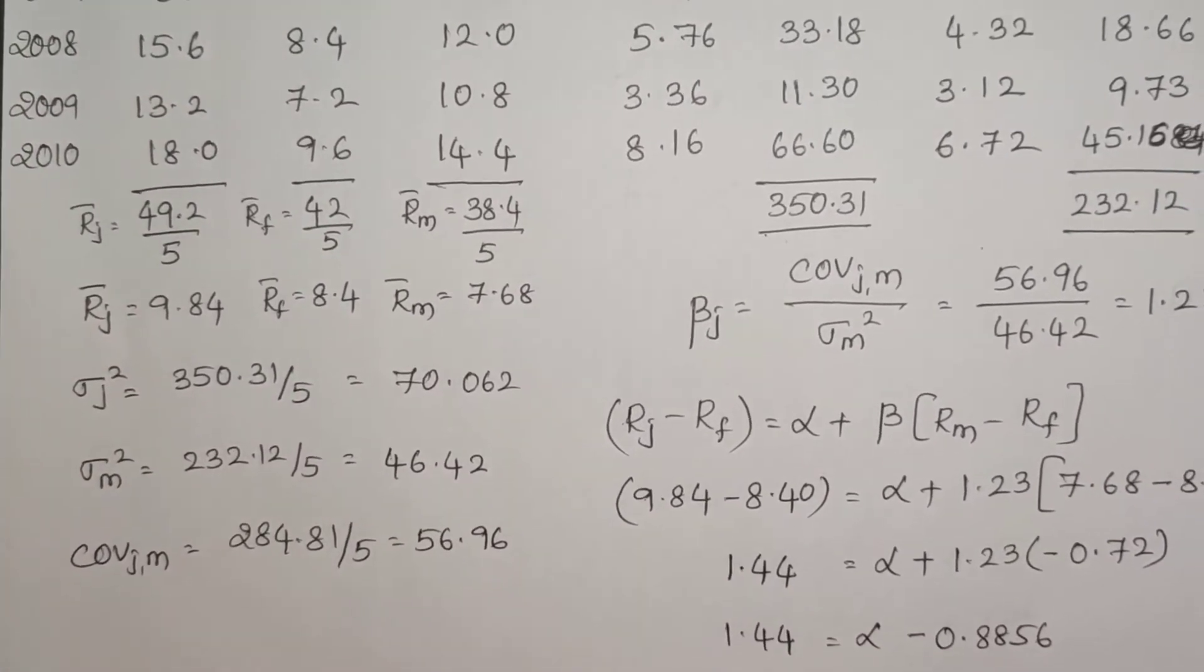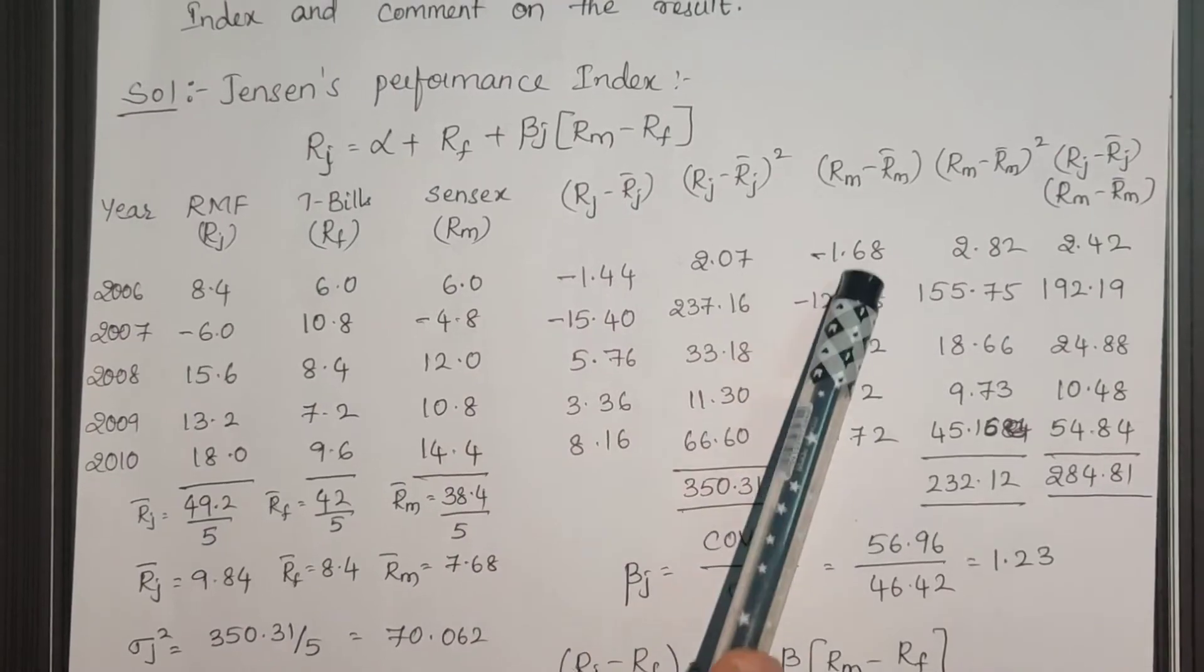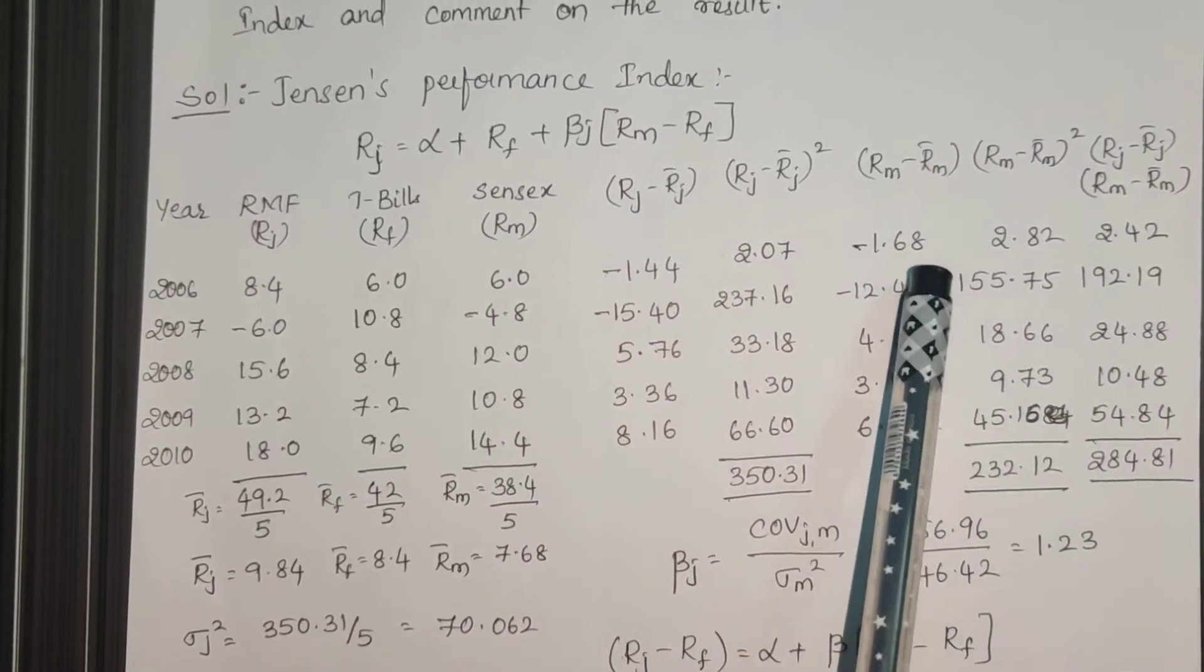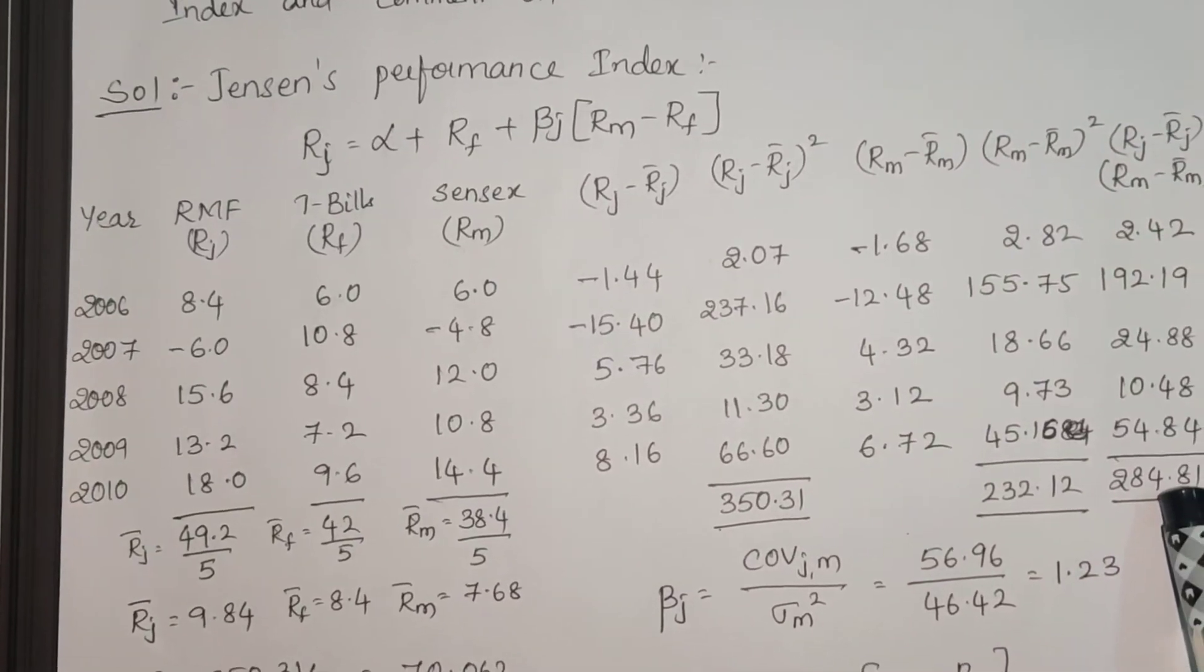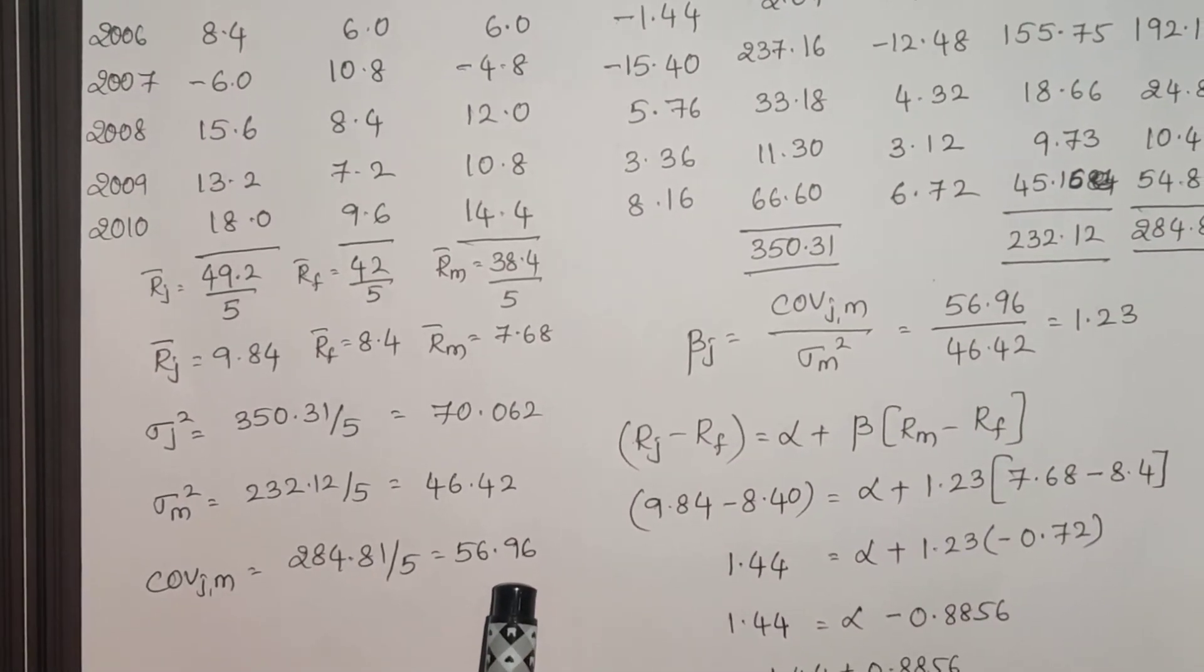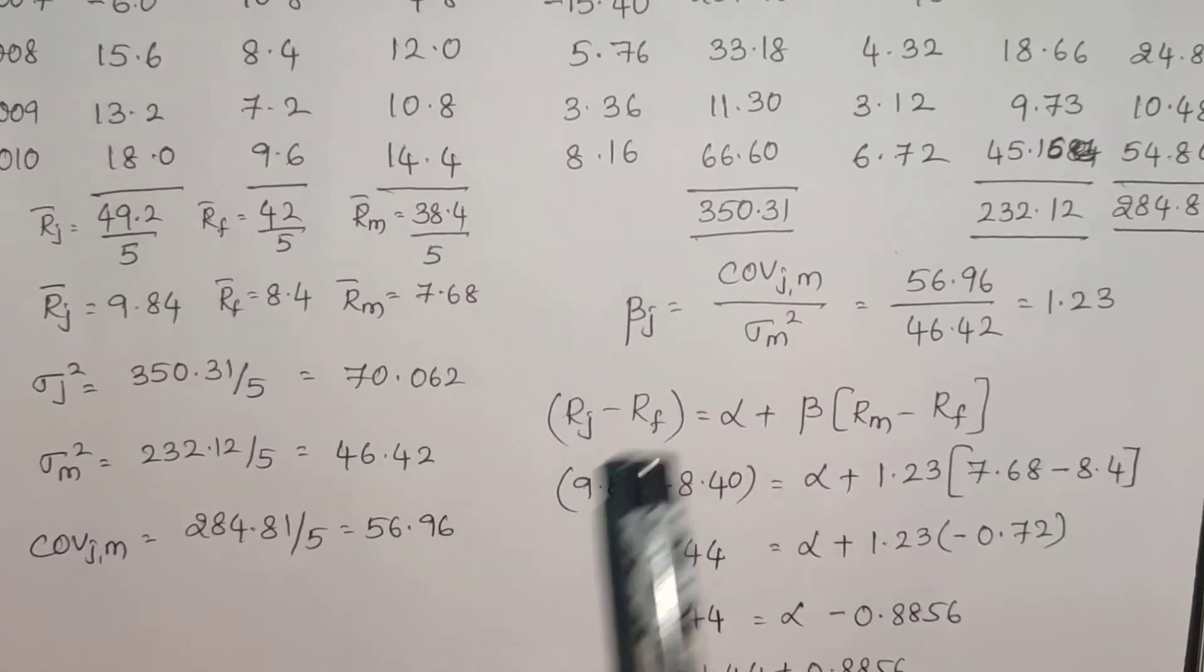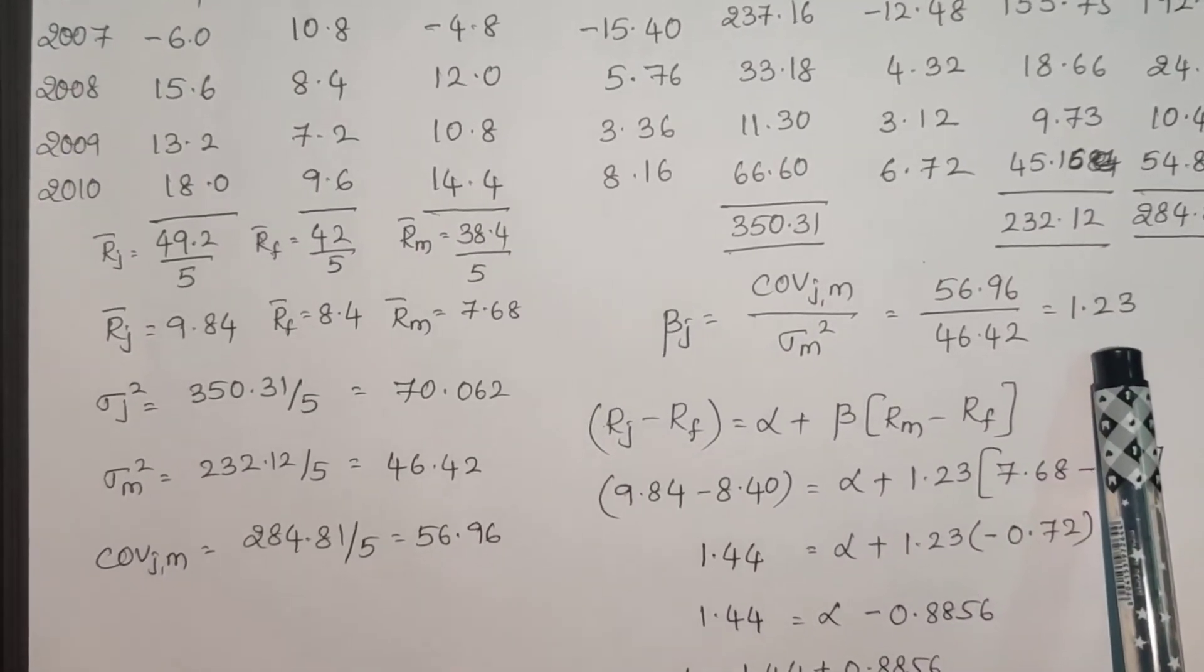Now covariance between portfolio and market. The formula for that is RJ minus RJ bar, the deviations of those two. Before squaring them, whatever we have calculated, multiply them. RJ minus RJ bar into RM minus RM bar. After multiplying them, sum them up, divide by number. This will give covariance between portfolio and the market. Now distributing this in beta formula, covariance by market variance, we got a beta of 1.23 for Reliance mutual fund.